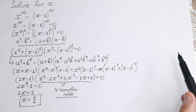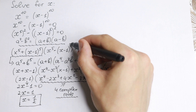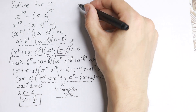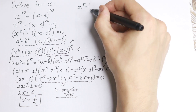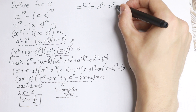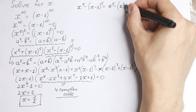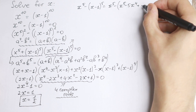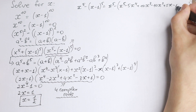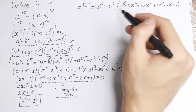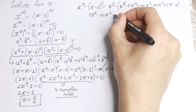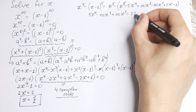Now let's go to the second factor and find those roots. We need to solve x to the fifth minus x minus 1 to the fifth power equal to 0. Expanding x minus 1 to the fifth using the binomial theorem, we get x to the fifth minus 5x to the fourth plus 10x cubed minus 10x squared plus 5x minus 1. The x to the fifth terms cancel, leaving 5x to the fourth minus 10x cubed plus 10x squared minus 5x plus 1 equal to 0.